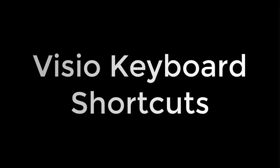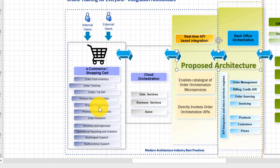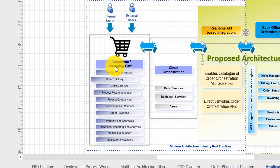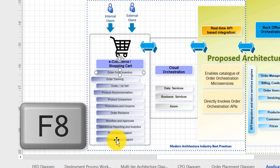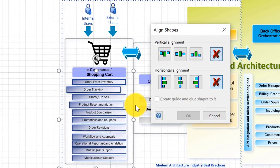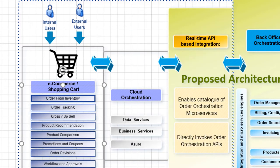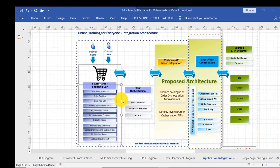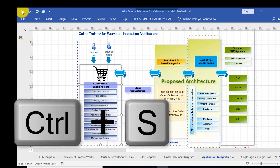Now let's look at the most useful Microsoft Visio keyboard shortcuts. My favorite shortcut helps align shapes - in the e-commerce shopping cart some shapes are misaligned. Select all the shapes and press F8, which brings up the Align Shape dialog box. I'm going to align the horizontal alignment to center. My other favorite shortcut is Ctrl+S which saves the document - equivalent to clicking the save button. In Visio you need to constantly change between pointer tool, connector tool, and text tool.